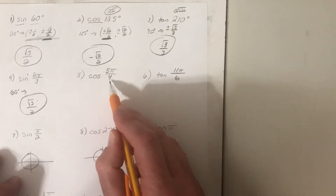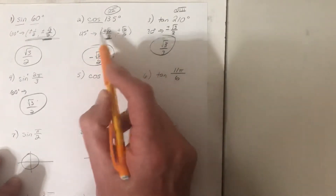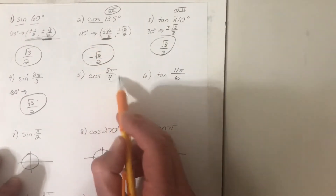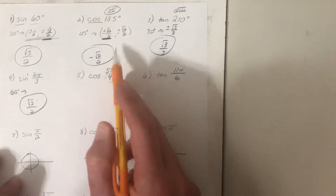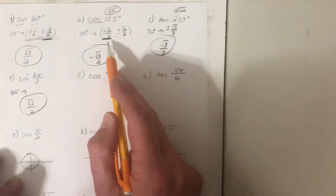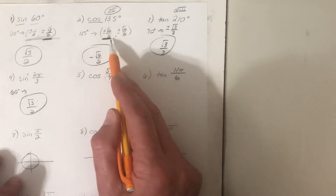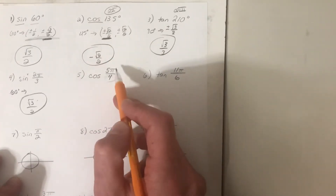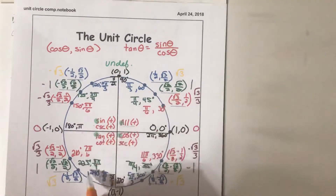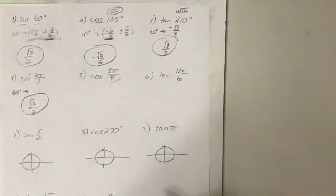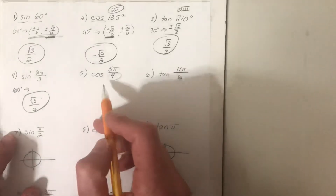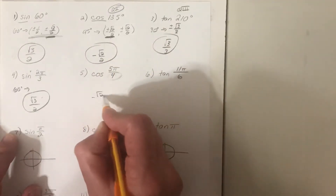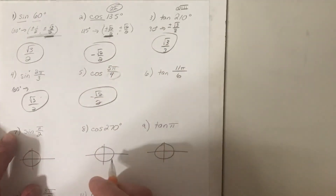For the cosine of 5π/4, the denominator is four, so this is a 45-degree reference angle with the same coordinate pair. Five pi over four is located in quadrant three — going pi/4, 3π/4, 5π/4. In quadrant three the x-coordinate is negative, so the answer is negative root two over two.